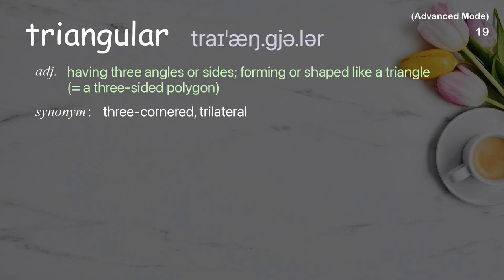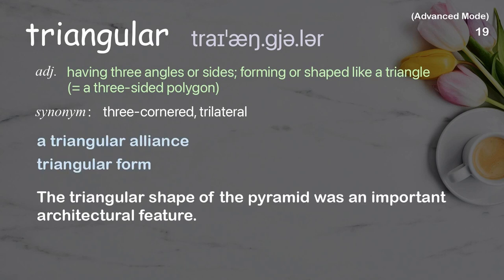Triangular. Having three angles or sides; forming or shaped like a triangle — a three-sided polygon. Examples: a triangular alliance, triangular form. The triangular shape of the pyramid was an important architectural feature.